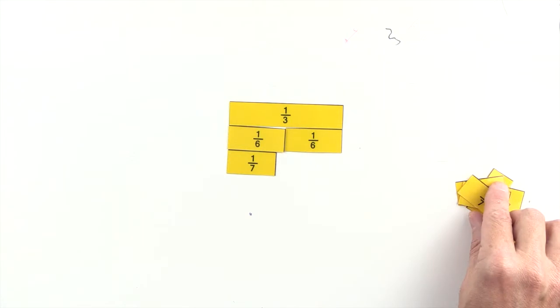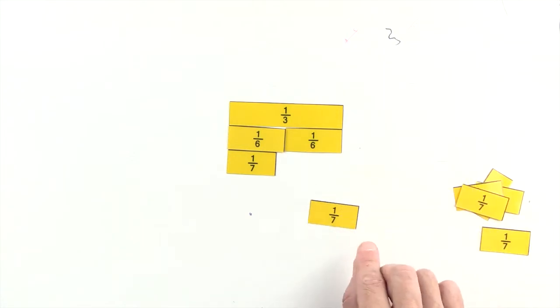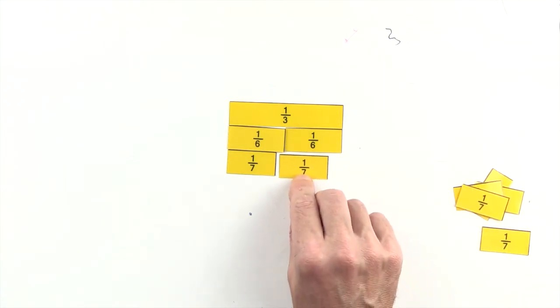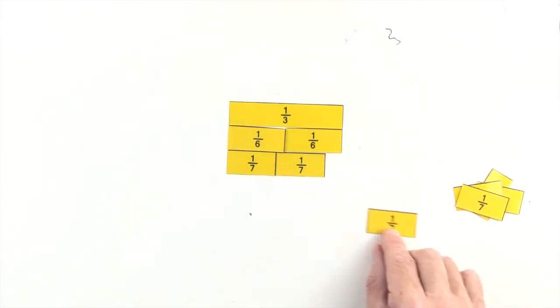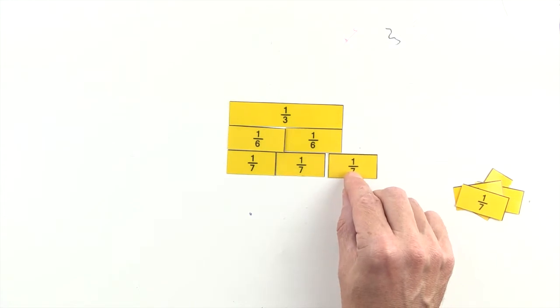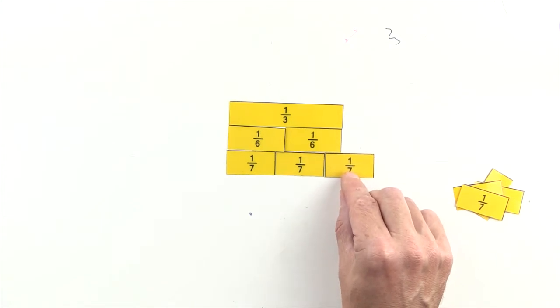1 seventh and 2 sevenths are less than 1 third, and 3 sevenths are greater than 1 third, so we can't use sevenths to make an equivalent fraction to 1 third.